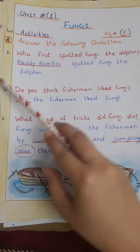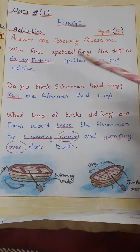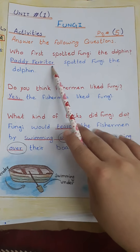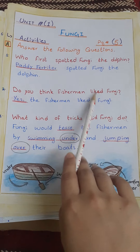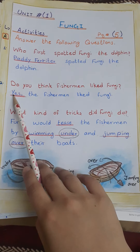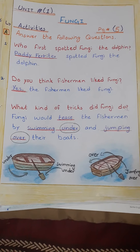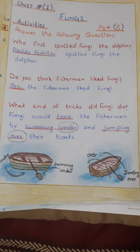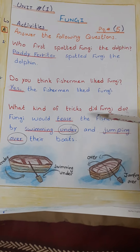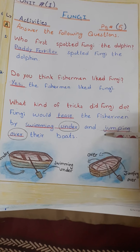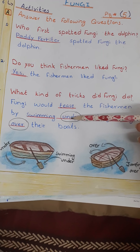I've prepared the answers for you. Question one: who first spotted Fungi the dolphin? The answer is Petty Predator — Petty Predator spotted Fungi the dolphin. Question two: do you think fishermen like Fungi? Yes, of course — the fishermen like Fungi. Question three: what kind of tricks did Fungi do? Fungi would tease the fishermen by swimming under and jumping over their boats.